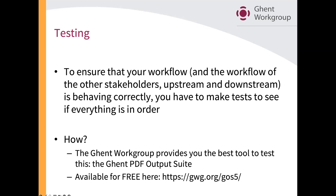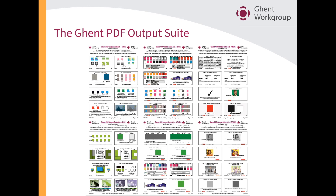You can download it and test it through your workflow — that means through the software, the RIP, and going to the final print to see how it looks. There's a chart with a lot of patches. [Slide advance] So it looks like that — you have a collection of patches developed by the Ghent Work Group to test every specific part of a PDF that could end up going wrong. Those different patches have been aggregated into six pages that you can run through your workflow. You can check everything around the CMYK, spot color, and color management parts.